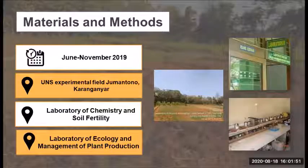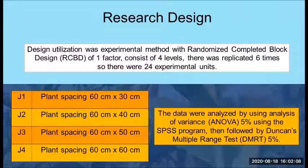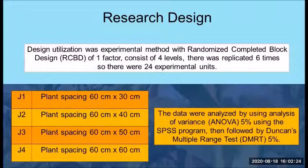This research was conducted from June to November 2019 in the UNS Experimental Field Jumatono, Karanganyar, Laboratory of Chemistry and Soil Fertility, and Laboratory of Ecology and Management of Land Production. The experimental method used was a randomized complete block design of one factor consisting of four levels: J1, J2, J3, and J4. They were replicated six times, so there were 24 experimental units. Data were analyzed using analysis of variance with the SPSS program, followed by Duncan's multiple range test.